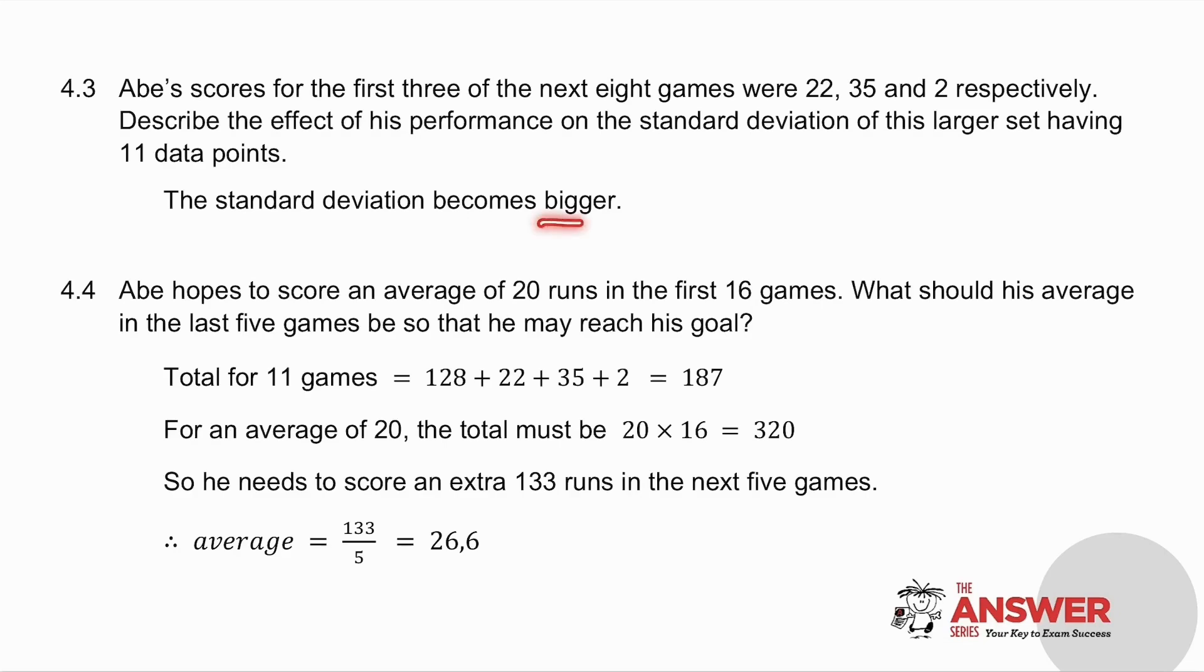4.4 says Abe hopes to score an average of 20 runs in the first 16 games. The first eight games added up to 128. Add the next three games, and he's got a total of 187 runs. If he wants an average of 20 in 16 games, it means that his runs must add up to 320. He's got 187. He wants 320. So he needs to score an extra 133 runs in the next five games, which means the average he needs for the next five games is 26.6.